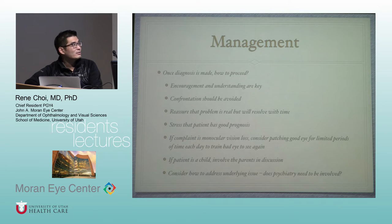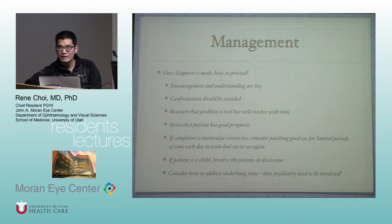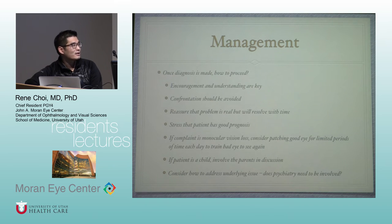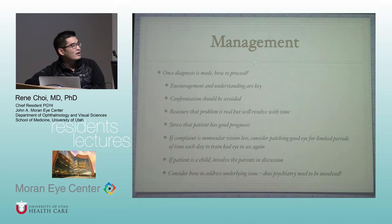For management once the diagnosis is made: encouragement and understanding are key — be empathetic, as this is very real to the patient. Avoid confrontation. Reassure the patient that the problem is real and will resolve over time. Stress that the patient has a good prognosis. If the complaint is monocular vision loss, consider patching the good eye for limited periods each day to train the bad eye. If the patient is a child, involve the parents. Consider how to address the underlying issue and refer for psychological evaluation as needed.